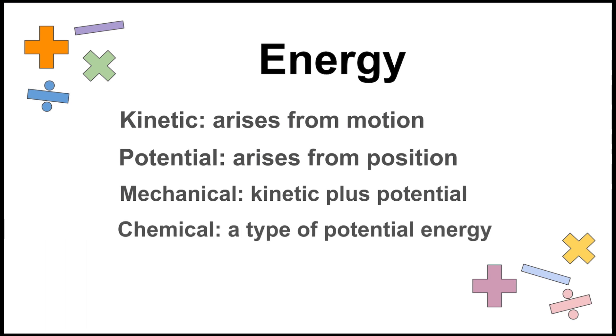We have also talked over a couple of subtypes of these classifications: chemical energy and heat. Because it is stored in the bonds between atoms and molecules, chemical energy is a form of potential energy. For heat, as it arises from molecules moving, it is a form of kinetic energy.